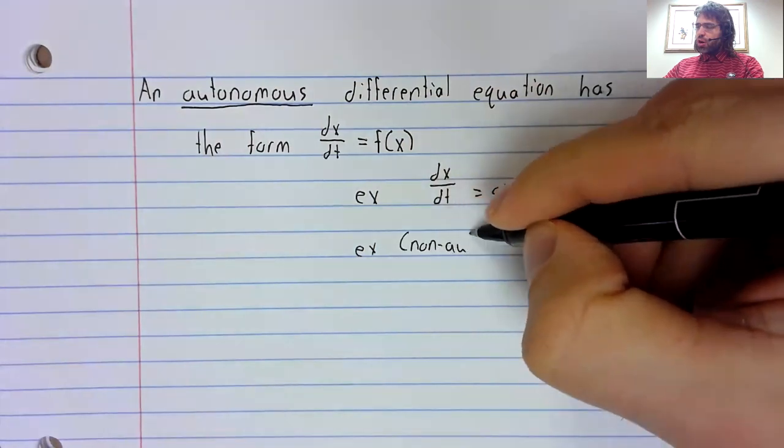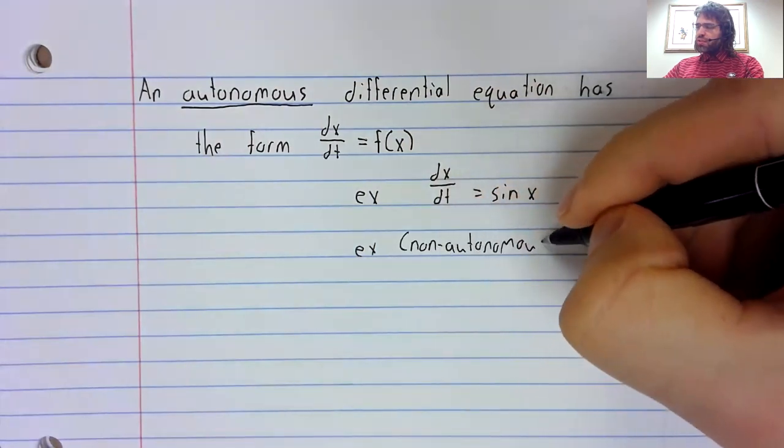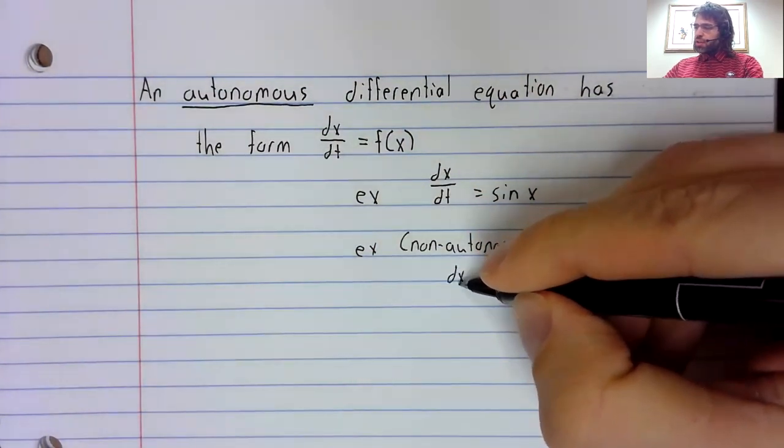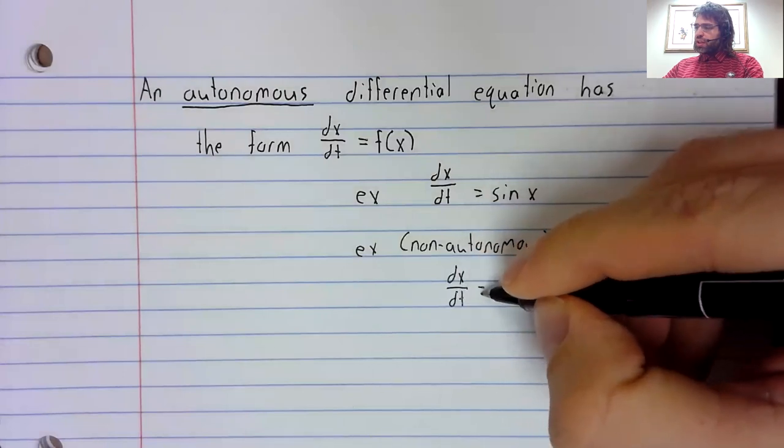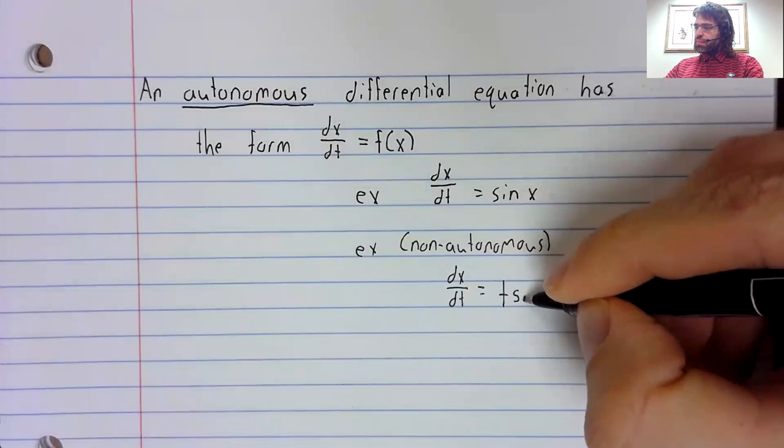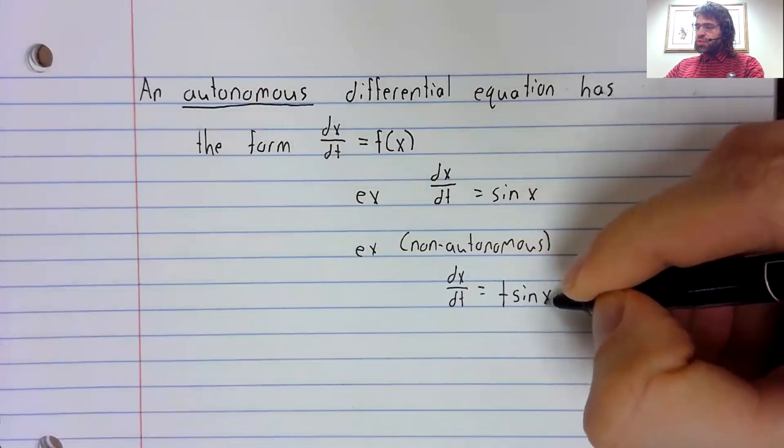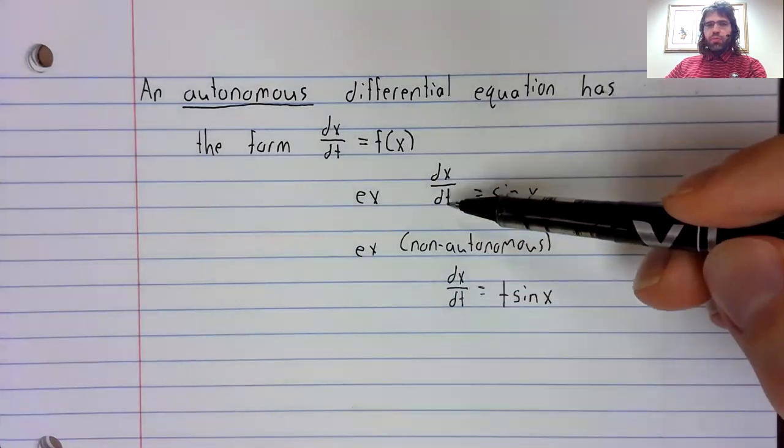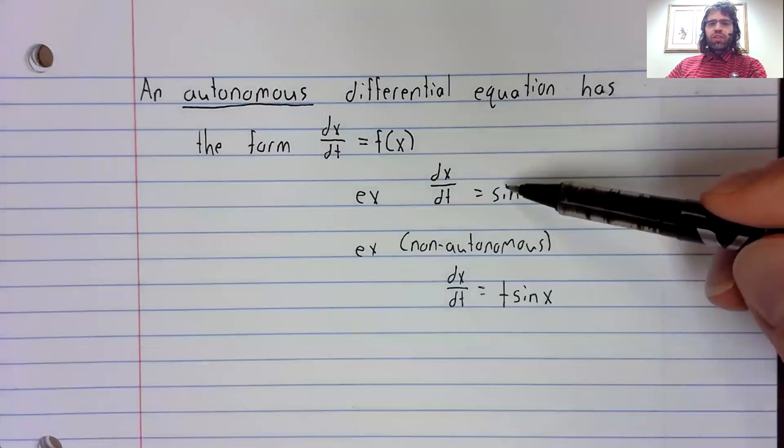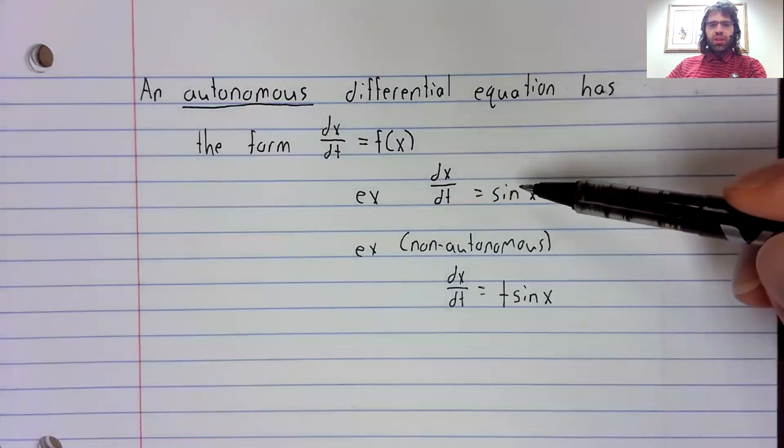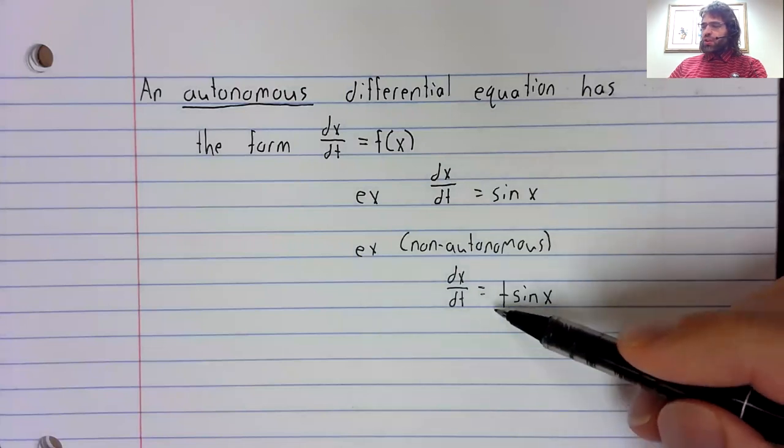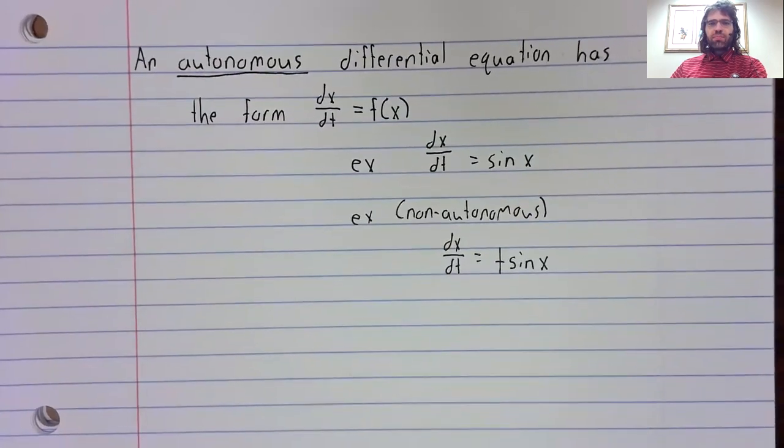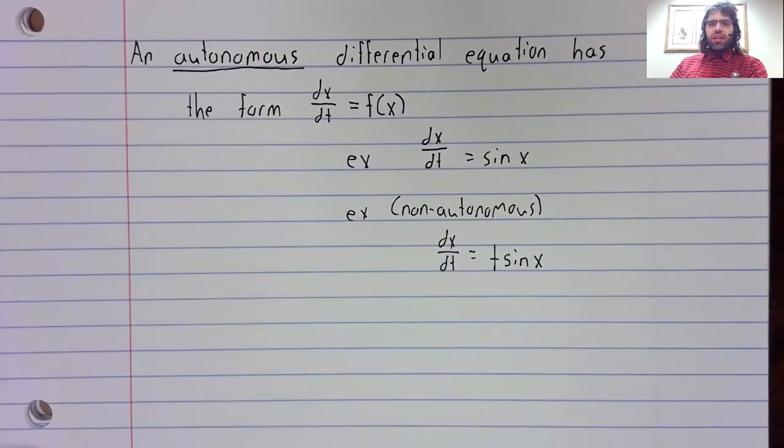dx/dt = t sin(x). You see our independent variable is t. Here, there aren't any t's on the right. That makes it autonomous. Here, there is a t on the right. That makes it non-autonomous.